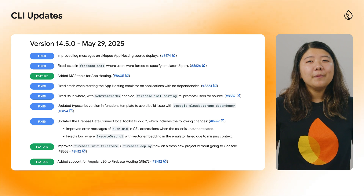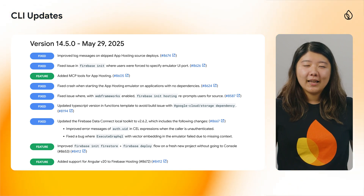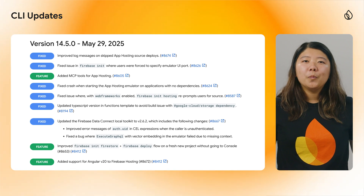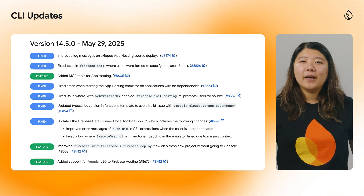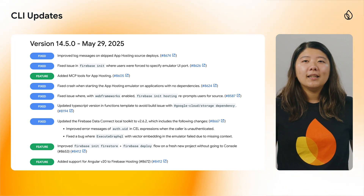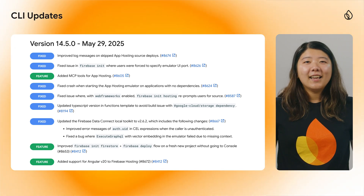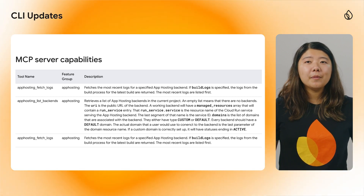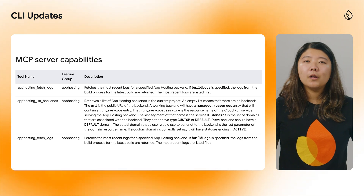Firebase CLI version 14.5.1 is out with a few updates. New MCP tools have been added for app hosting. MCP stands for Model Context Protocol, an open standard with a goal to standardize how AI applications connect with external tools, data sources, and systems. These new tools combine the backend and its traffic resource to help LLMs make better inferences about your app's traffic, and provide new capabilities to fetch, build, or service logs.